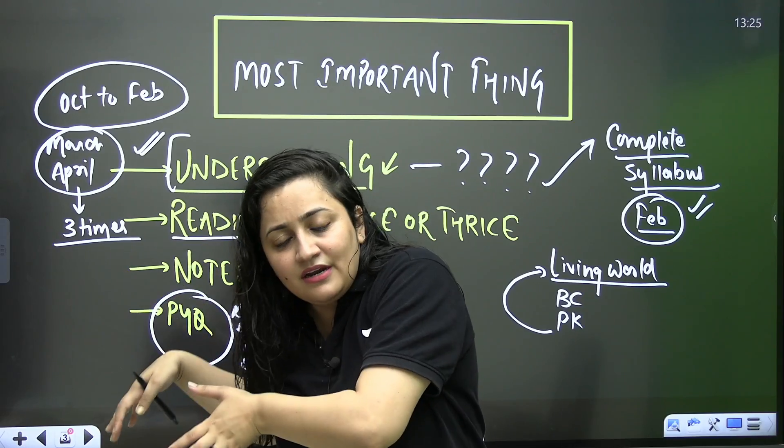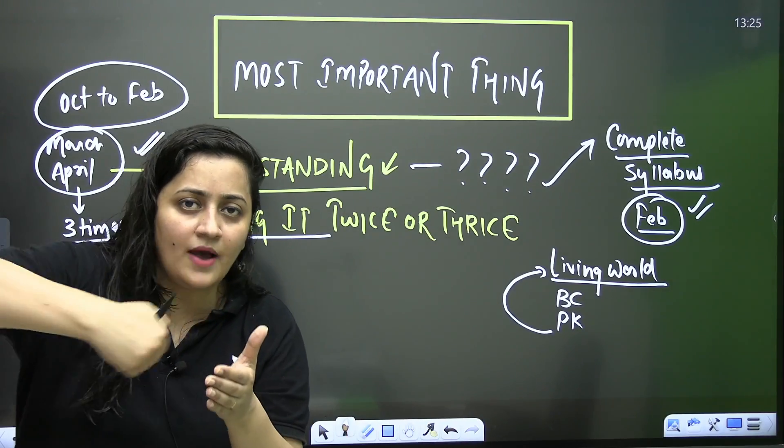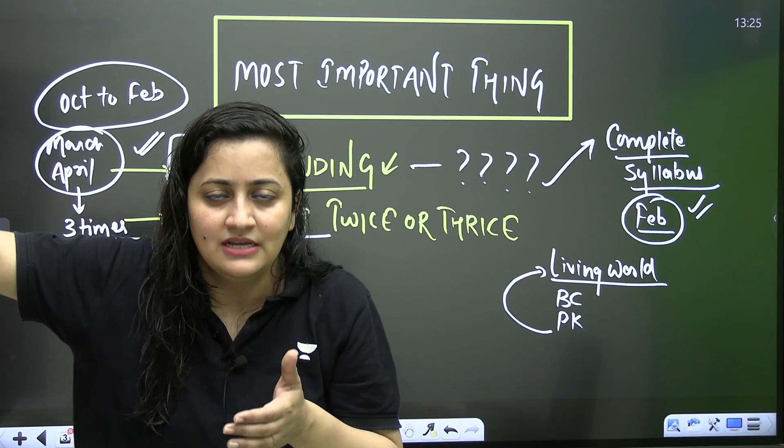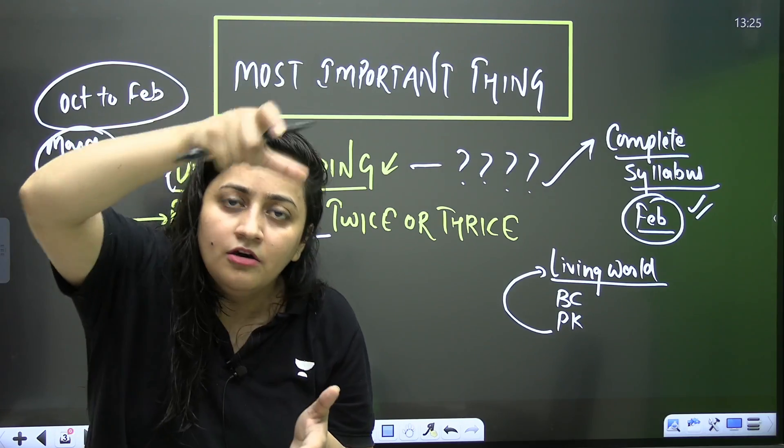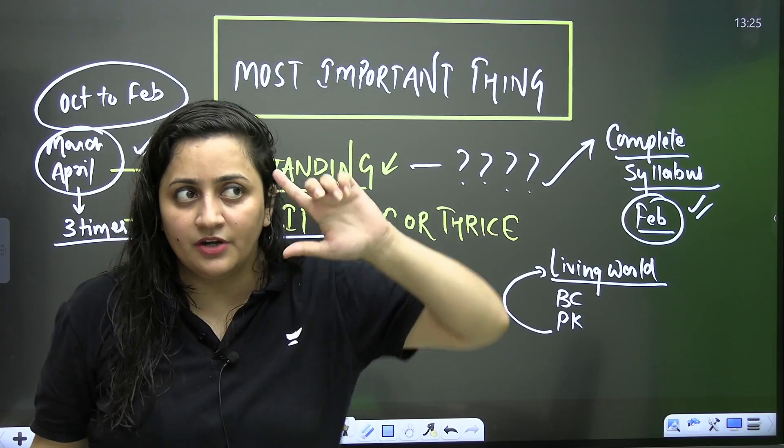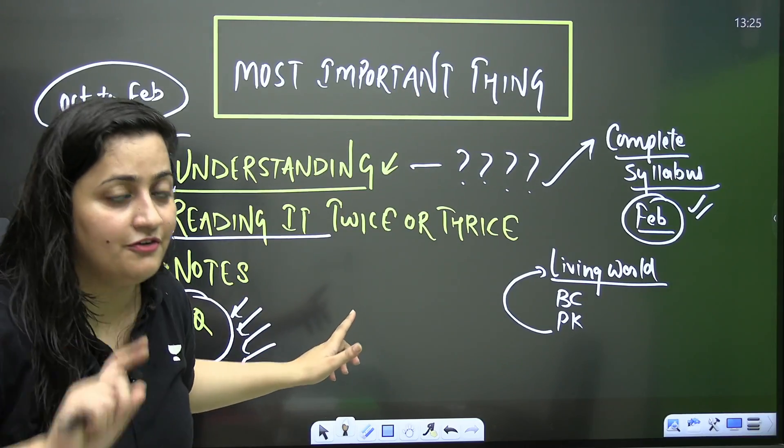Like three chapters, after completing three chapters, whatever notes you have formed, revise that notes. Then, next three chapters, revise that chapters from the notes. And after completing six chapters, then please read the summary of all the chapters that you have completed so far from the NCRT. It will give you a quick idea of that chapter. It will help you to recall that. That's how you have to proceed first. This is the first step.